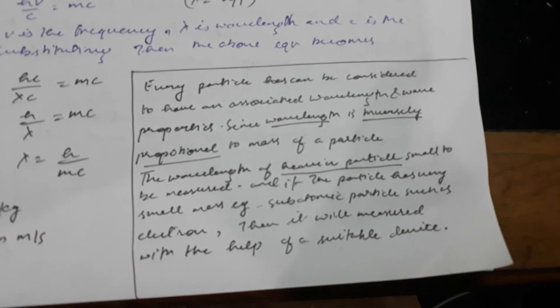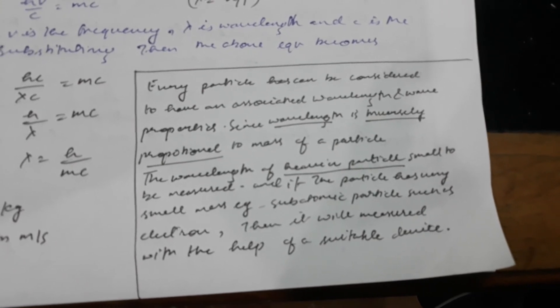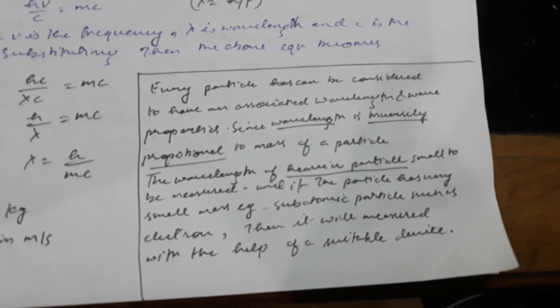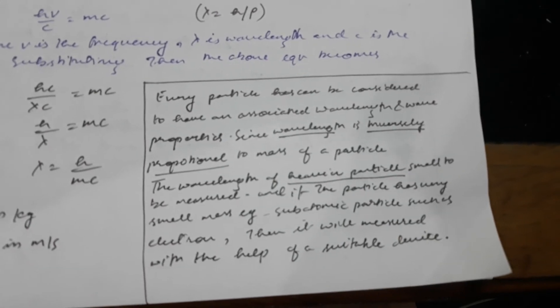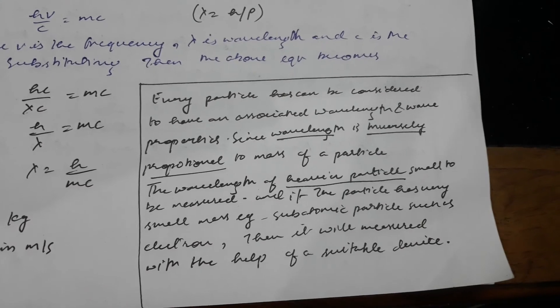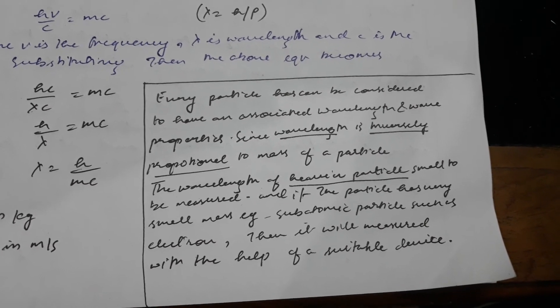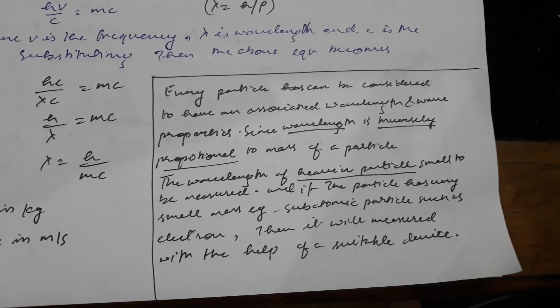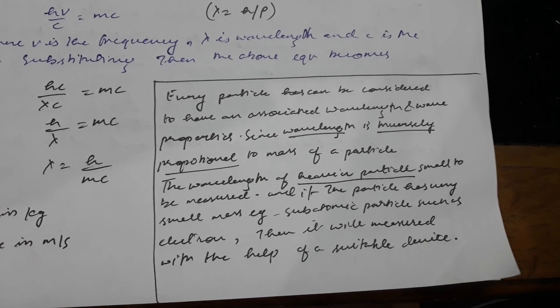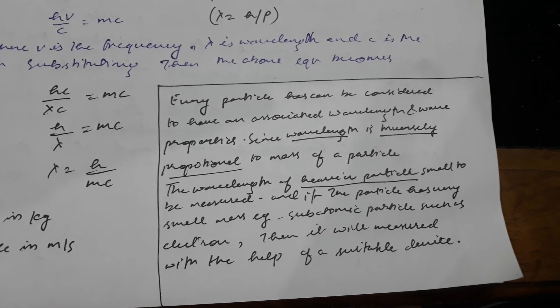The wavelength is too small to be measured because wavelength is inversely proportional to mass. However, if the particle is very small, for example a subatomic particle such as an electron, then it can be measured with the help of a suitable device.